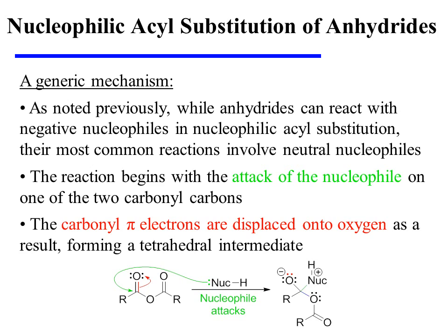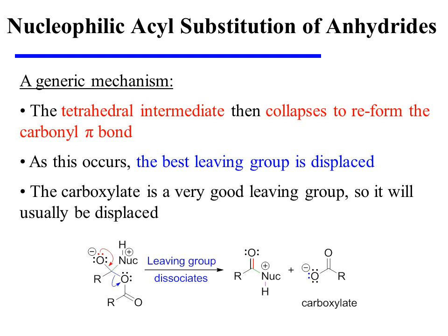While anhydrides certainly can react with negative nucleophiles, their most common reactions involve neutral nucleophiles. And when a neutral nucleophile is used, the reaction also begins with the attack of the nucleophile on one of the two carbonyl carbons. That carbonyl's pi-bonding electrons are pushed onto oxygen as a lone pair, forming a tetrahedral intermediate. The tetrahedral intermediate then collapses to reform the carbonyl pi-bond, and as this occurs, the best-leaving group is displaced.